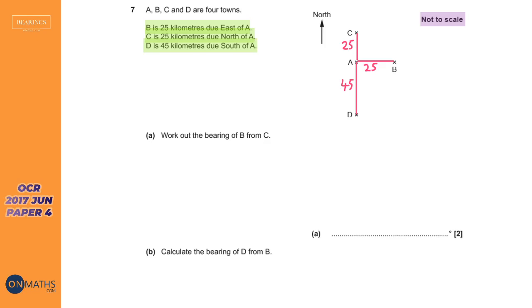The first question says work out the bearing of B from C. So we're at C. Let me put my north line on. So north line will go there, and we'll work out the angle of B from C. Let's draw the line and let's get the angle there we're looking for. Quite a lot to dissect there.